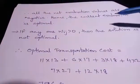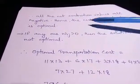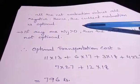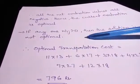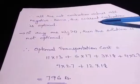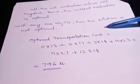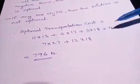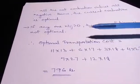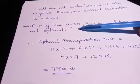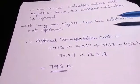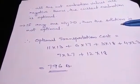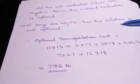All the net evaluation values are negative, hence the current solution is optimal. The optimal transportation cost is calculated as the sum of cost multiplied by allocation value for each allocated cell. Since all wij values are negative (less than or equal to zero), the initial feasible solution obtained by VAM is confirmed to be optimal.